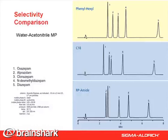This figure compares five benzodiazepines on three different Ascentis Express reverse phase columns in a simple water-acetonitrile mobile phase. Note that overall retention in acetonitrile is similar for the three bonded phases, but elution order is different. The two less polar compounds — diazepam and desmethyl diazepam — elute late and show the same order for all columns due to the predominance of hydrophobic interactions.